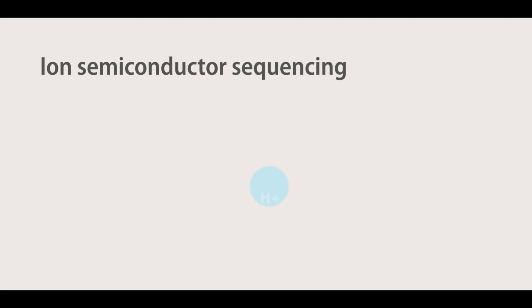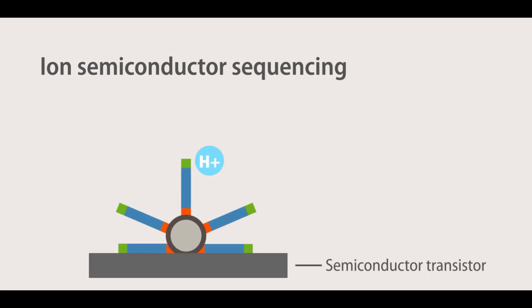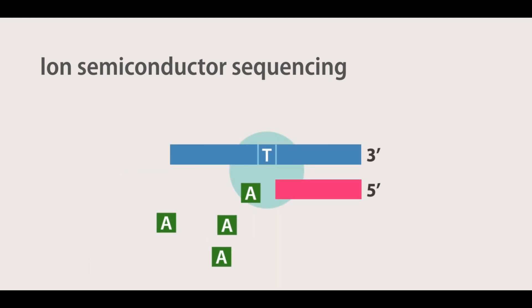Ion semiconductor sequencing utilizes the release of hydrogen ions during the sequencing reaction to detect the sequence of a cluster. Each cluster is located directly above a semiconductor transistor which is capable of detecting changes in the pH of the solution.